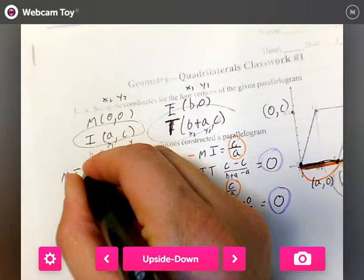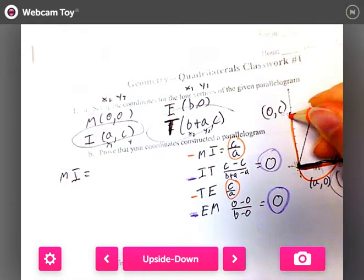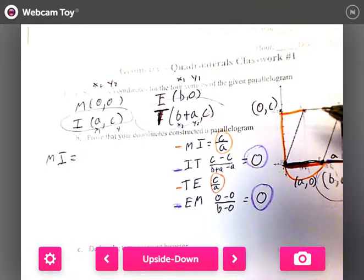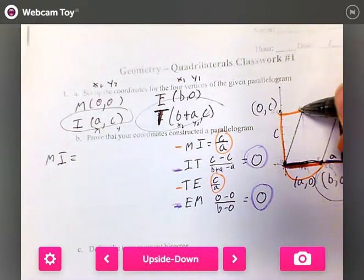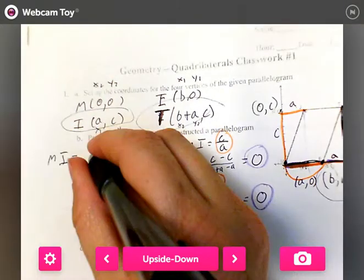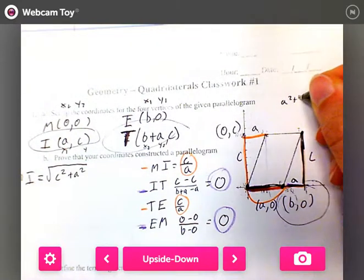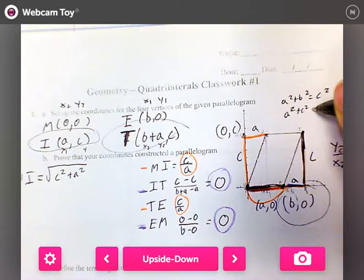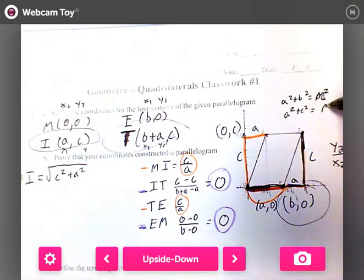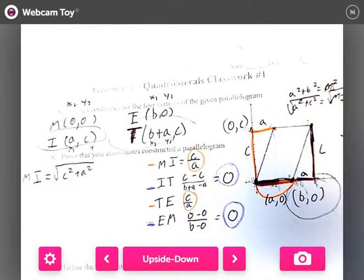Opposite sides also have to be what to each other? Congruent. So, M, I. Let's look from M to I. We're going to do it graphically first. How much did I go up? From M to I, I went up how much? C. And I went over how much? A. So that's going to be C squared plus A squared square rooted. Because the formula is A squared plus B squared equals C squared. So we plug in A and C here. So it's A squared plus C squared equals MI squared. Take the square root to get rid of the square sign.